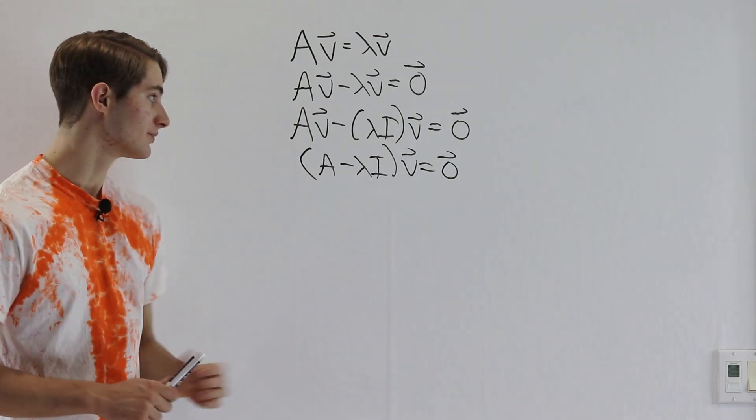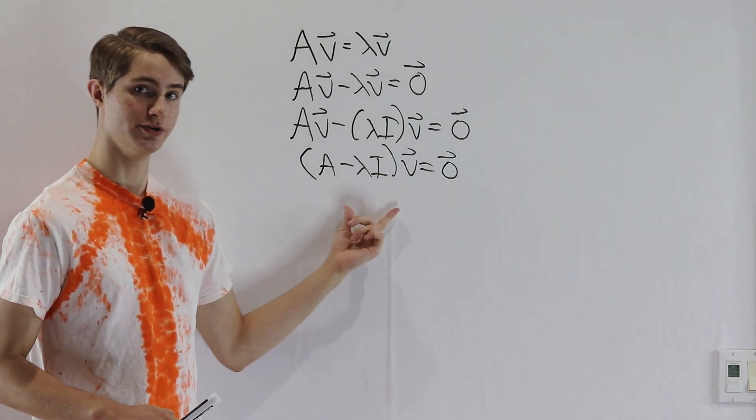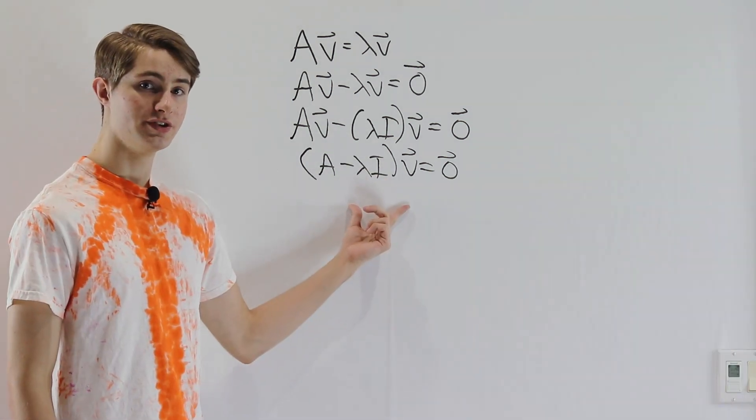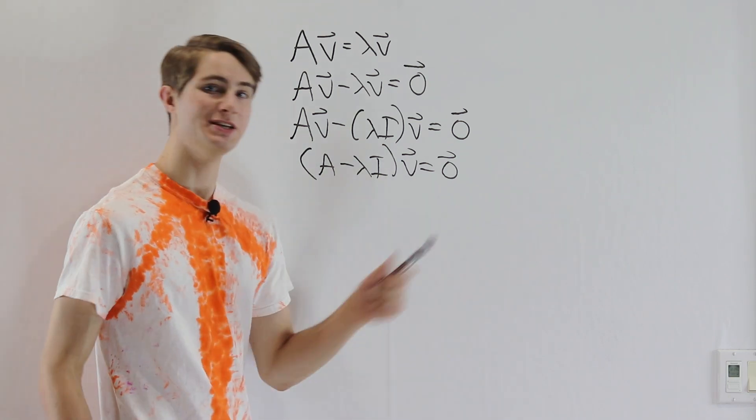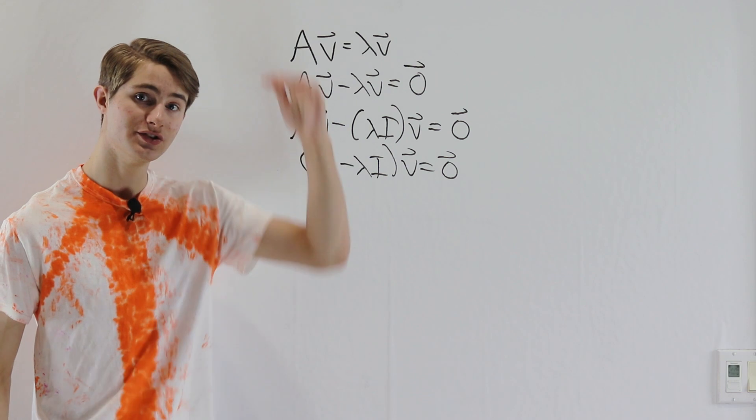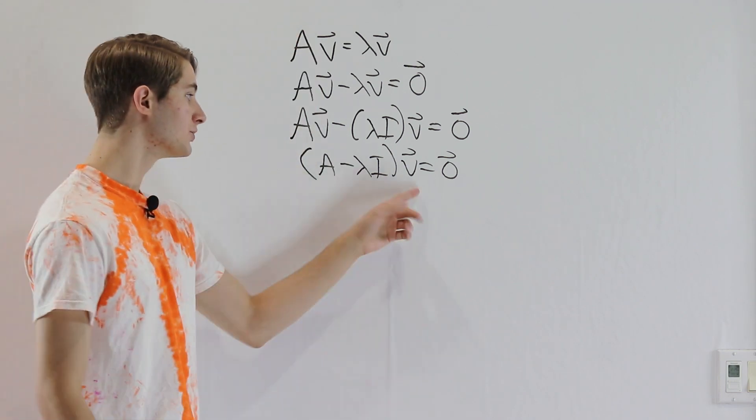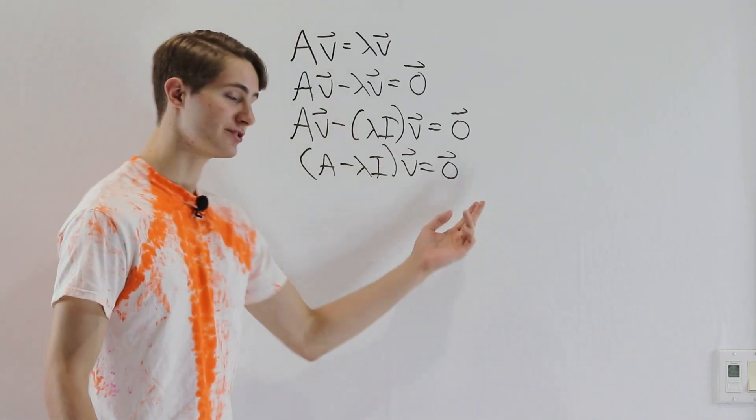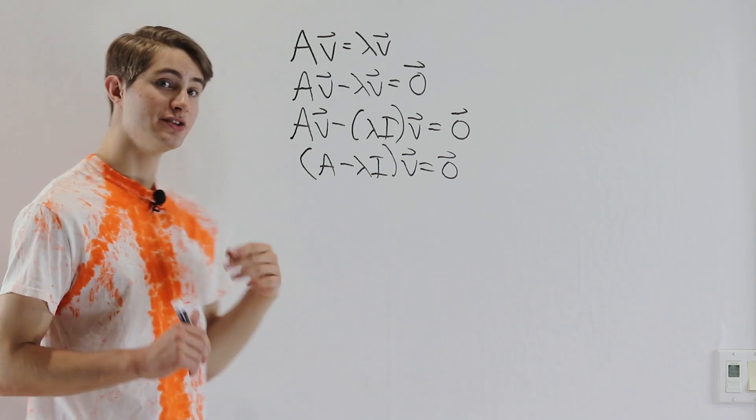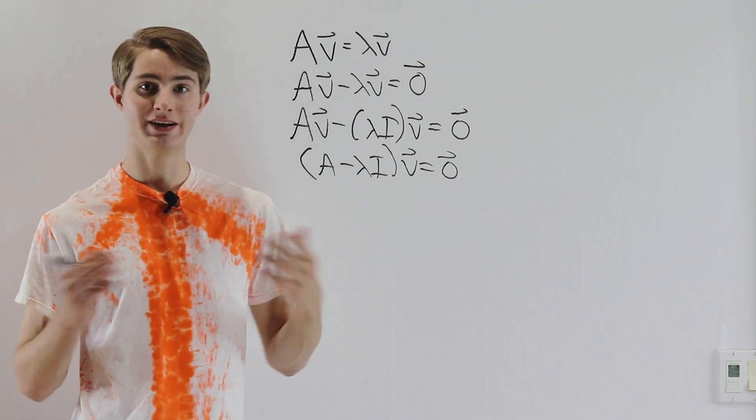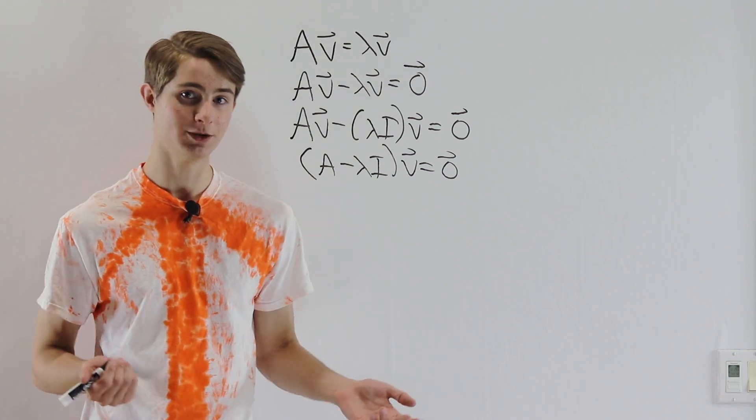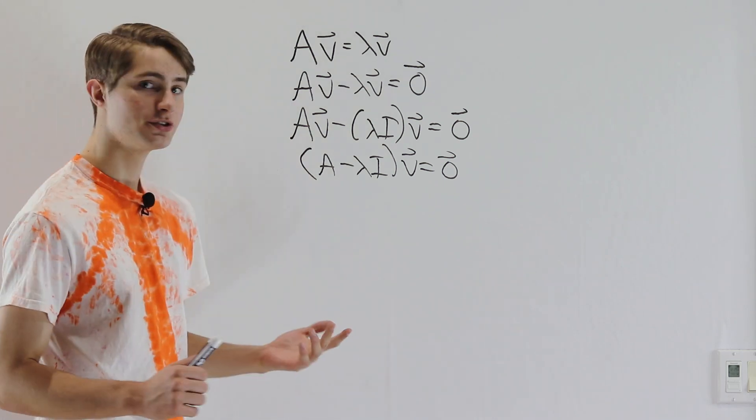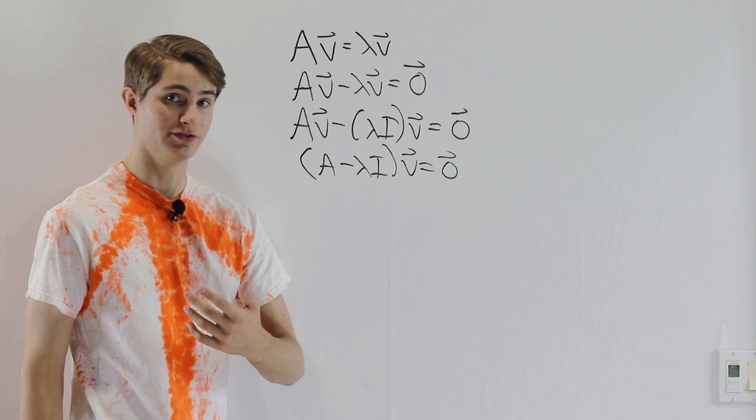And now we want to ask ourselves, when is this equation true? So if we want to solve this equation, we know that one solution is going to be just letting V be the 0 vector. Because if V is just 0, 0, 0, 0 all the way down, multiplying it by any matrix will still get us back to 0. But in fact, the 0 vector is so boring that we don't even count it as an eigenvector, because then it's an eigenvector of everything, and that doesn't really help us very much. So we want solutions where V is not the 0 vector.